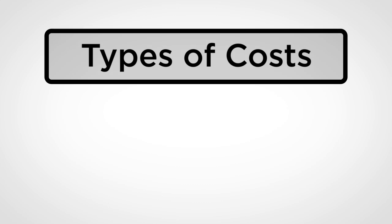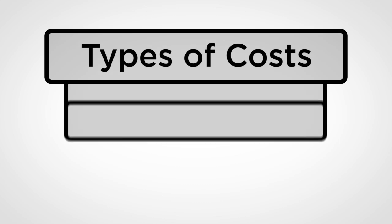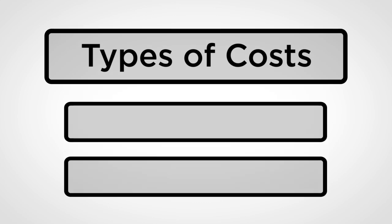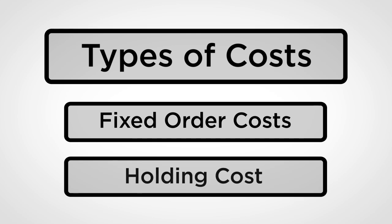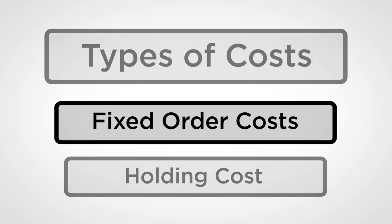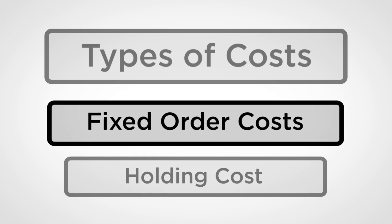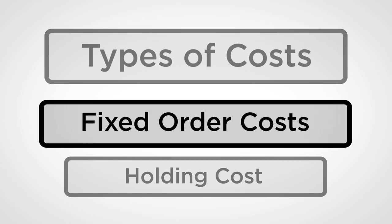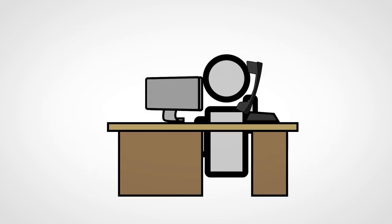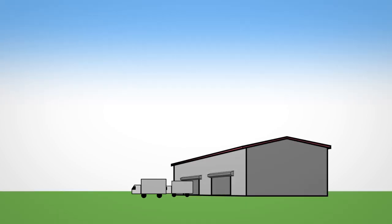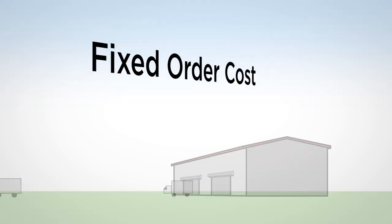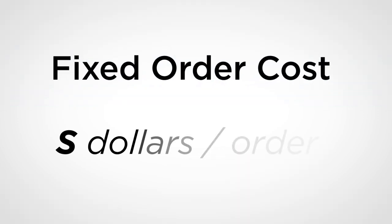To come up with your order policy, you need to understand the costs you would incur in managing inventory. We distinguish two types of costs: fixed order costs and holding costs. Fixed order cost refers to the fixed cost incurred in placing orders — this cost is incurred no matter how much you order. Think of the man hours involved in placing, managing, and tracking the orders, and any fixed shipping costs. We denote the fixed order cost by S dollars per order.